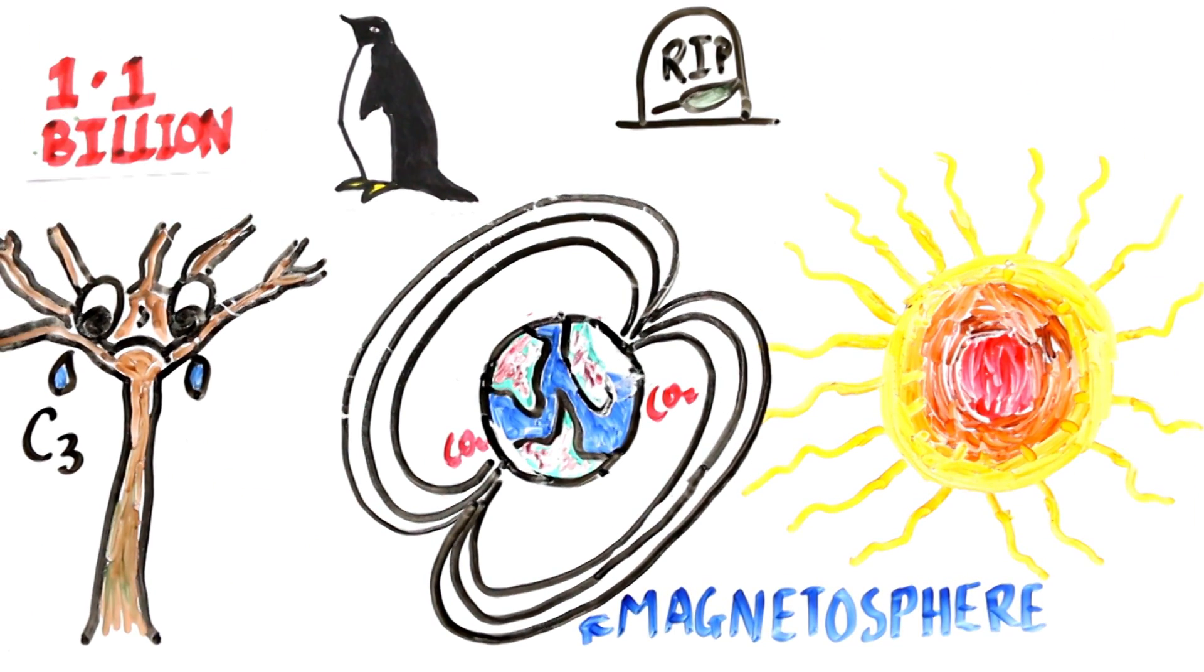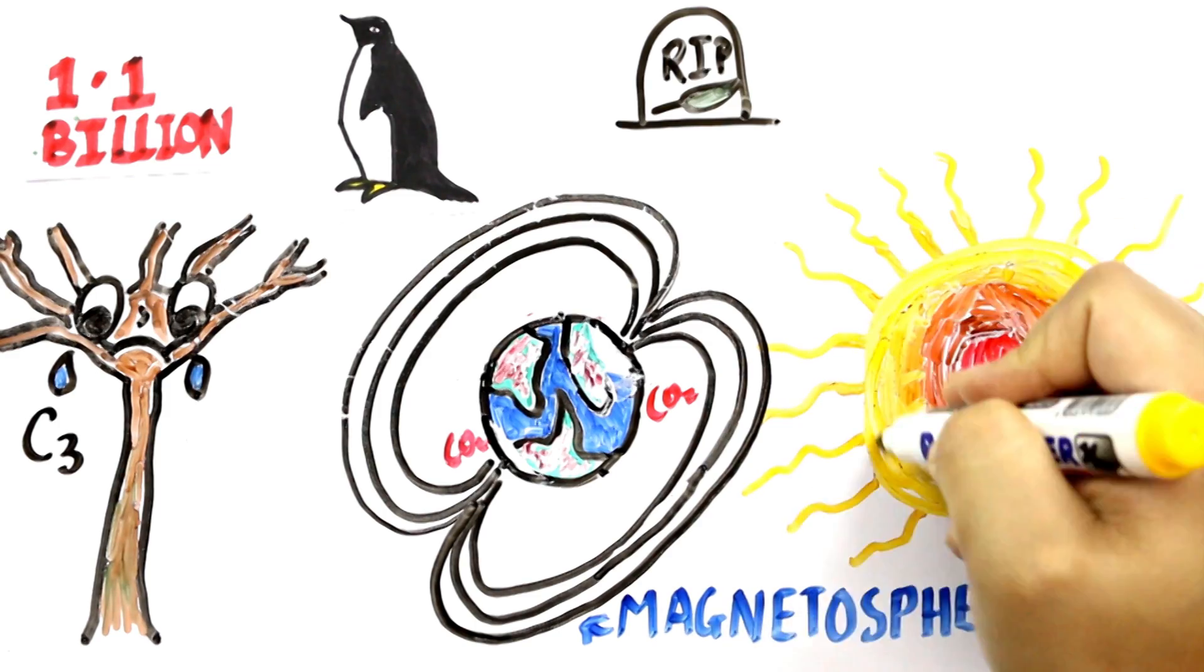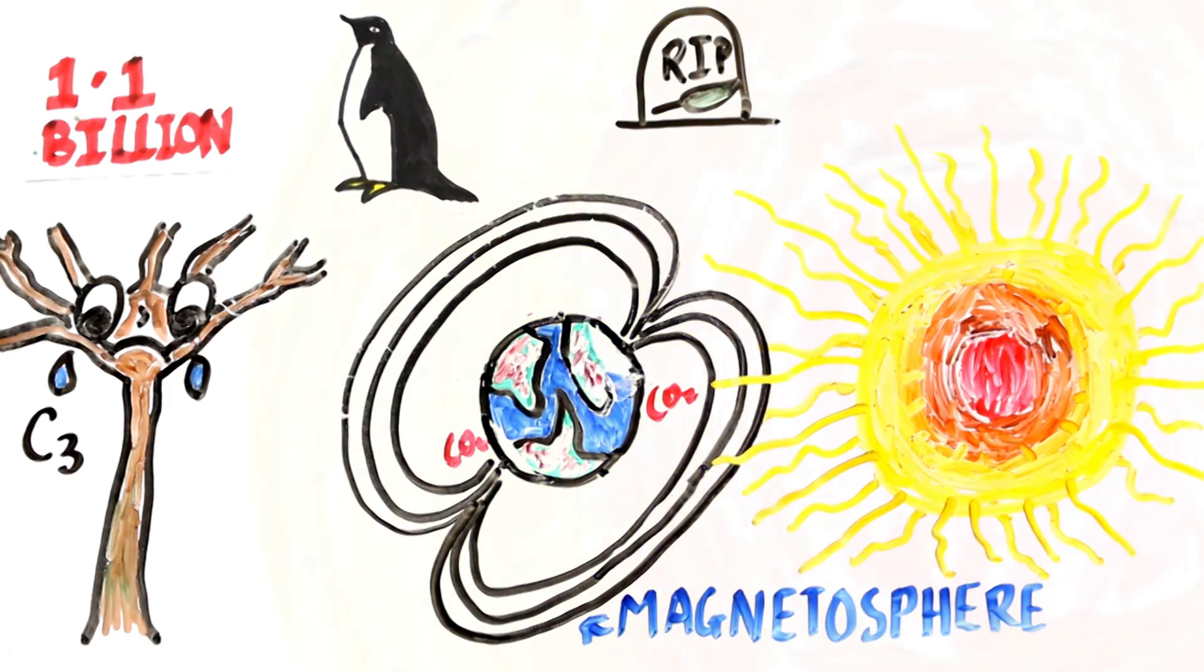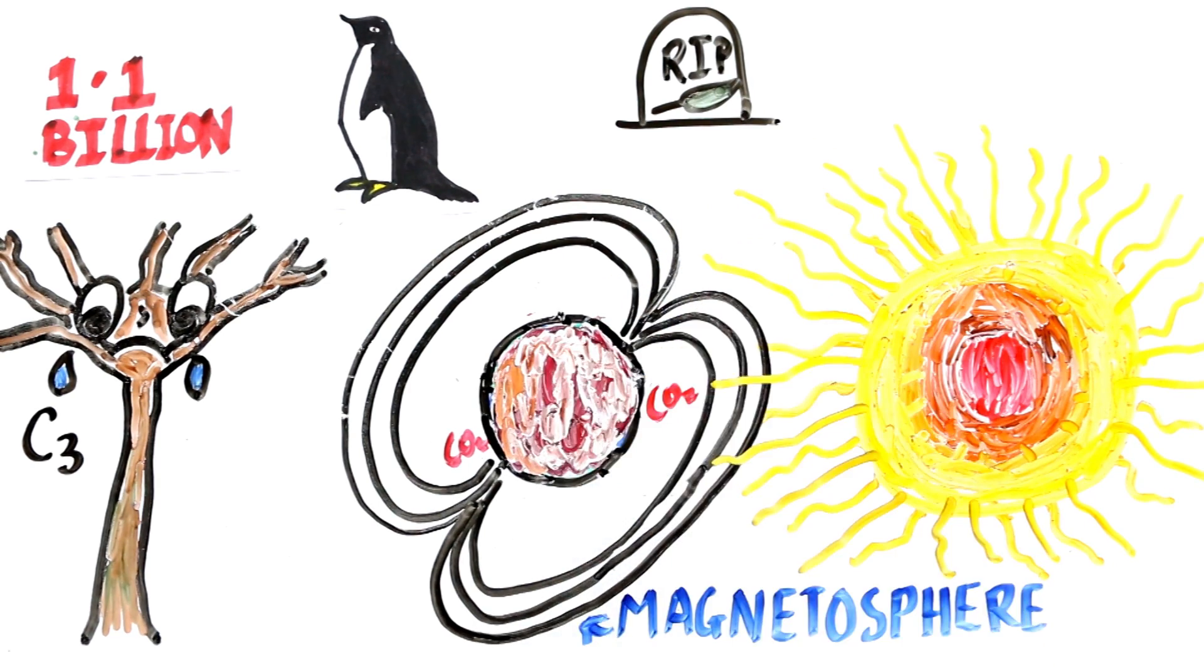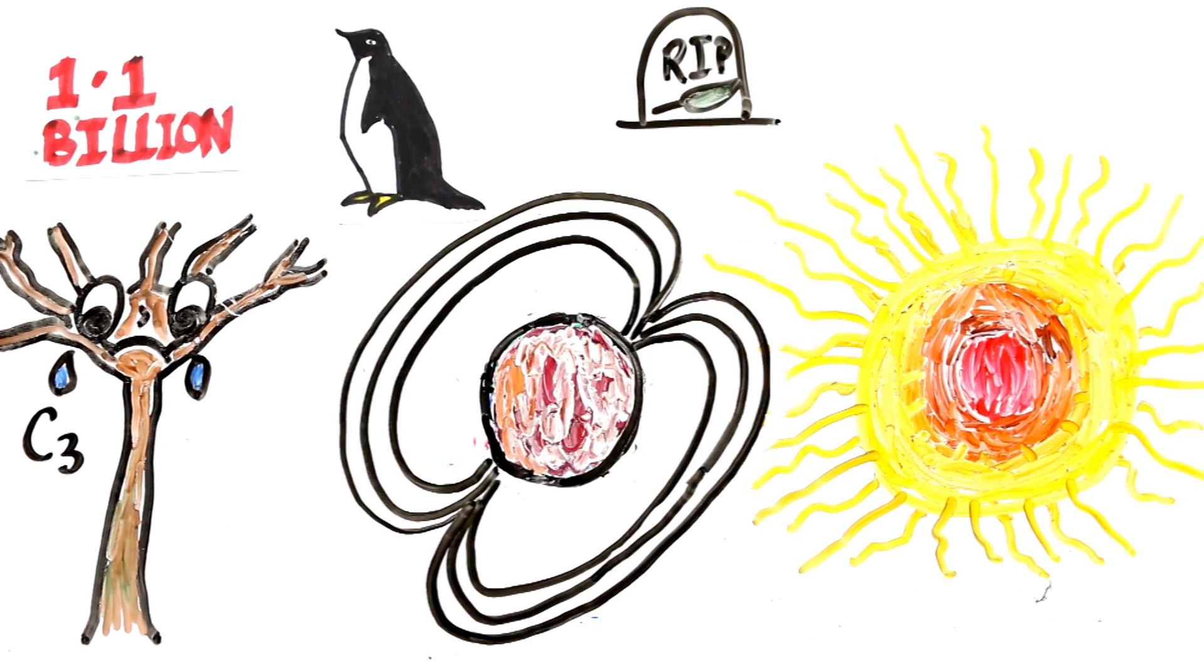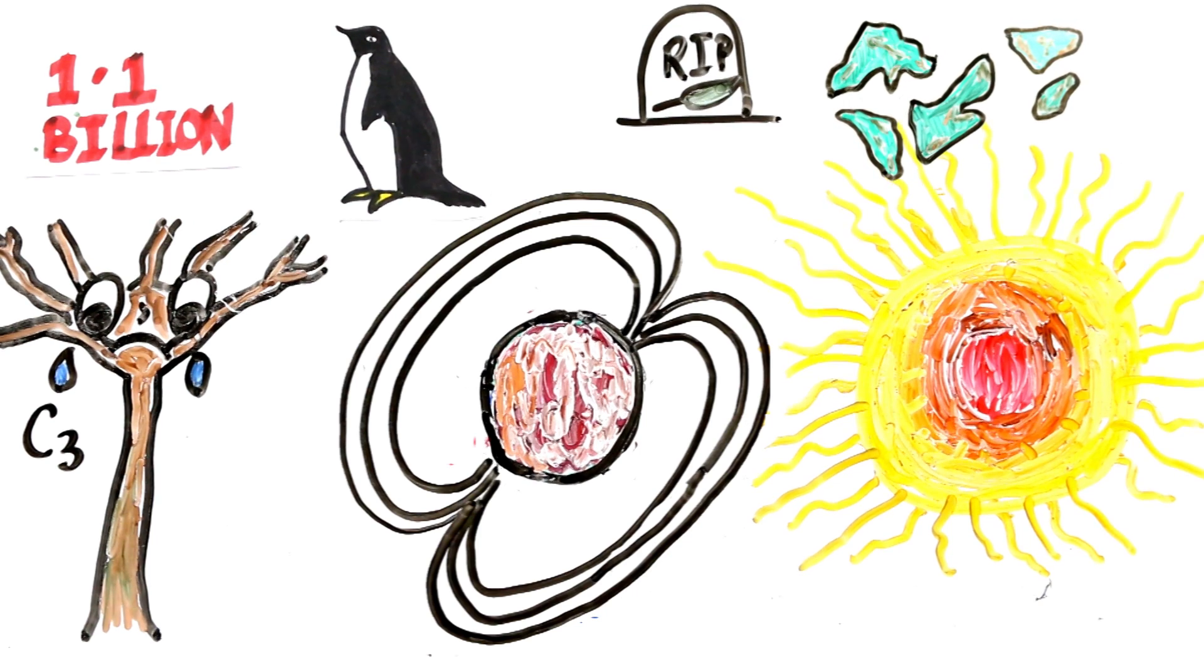In about 1.1 billion years, the solar luminosity will be 10% higher than at present. This will cause the atmosphere to become a moist greenhouse, resulting in a runaway evaporation of the oceans. As a likely consequence, plate tectonics will come to an end, and with them, the entire carbon cycle.